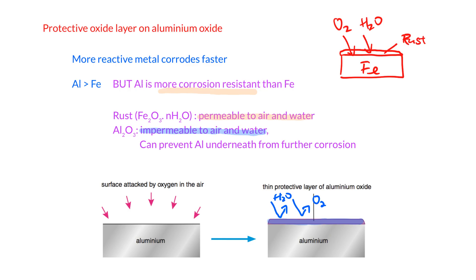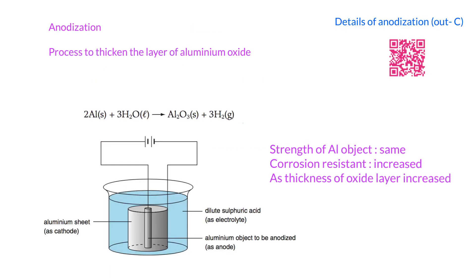However, this layer of aluminium oxide is pretty thin, so it may wear off very easily. To address this, we use a process called anodization — pay attention to the spelling. Anodization is used to thicken the layer of aluminium oxide. The details of the anodization process are outside the syllabus, but you can use the QR code provided to learn more, as it involves many steps.